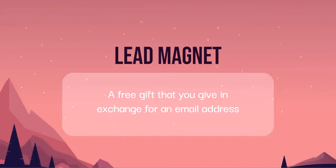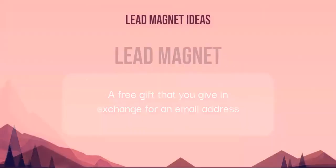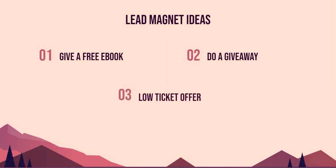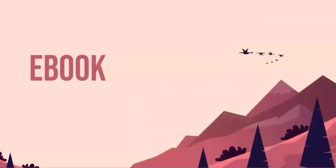There are three different ways we can do this. First, we can offer a free ebook. We can give away something of value, like a vacation or an iPad. Or we can offer a low ticket item around $5 to $7. The first method — giving away a free ebook — is the most popular and most basic. If you don't want to write it yourself, you can use a site like Fiverr or have a freelancer create it. It doesn't need to be long; just five to seven pages will do.